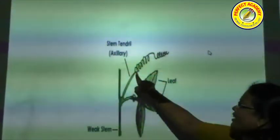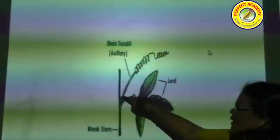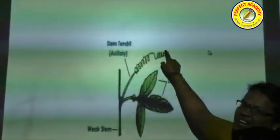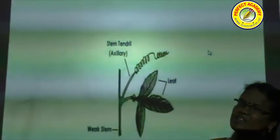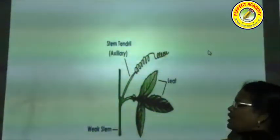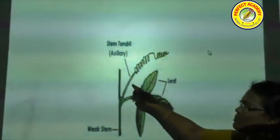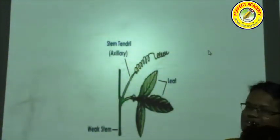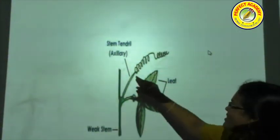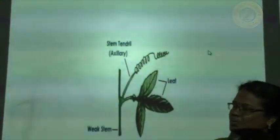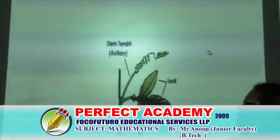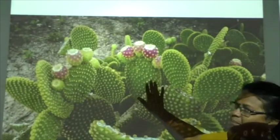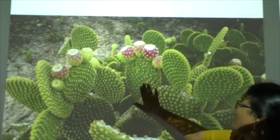This is an example of a stem tendril — a branch of a stem that gets highly coiled to form a tendril structure. The tendril supports holding onto objects because the stem is not erect and cannot stand alone in the soil. The tendril helps the plant withstand by gripping surrounding objects. This is an example of a phylloclade — Opuntia.